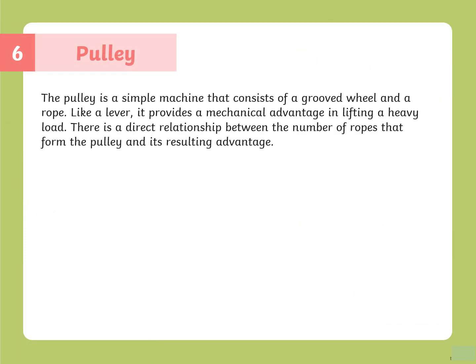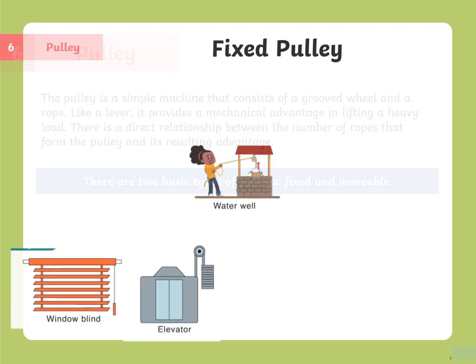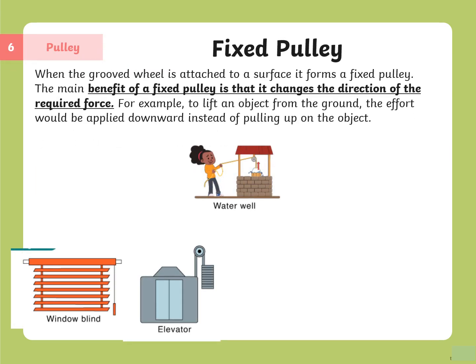The sixth simple machine is the pulley. A pulley consists of a grooved wheel and a rope, and like a lever, it provides a mechanical advantage in lifting heavy loads. There is a direct relationship between the number of ropes forming the pulley and its mechanical advantage. There are two basic types: fixed pulley and movable pulley. When the grooved wheel is attached to a surface, it forms a fixed pulley. The main benefit of a fixed pulley is that it changes the direction of the required force — for example, to lift an object from the ground, effort is applied downwards instead of pulling up.